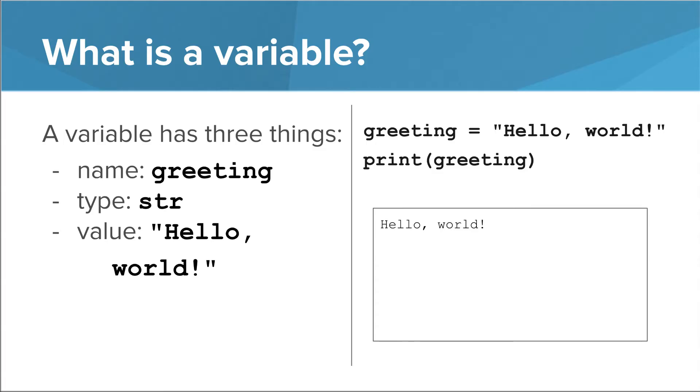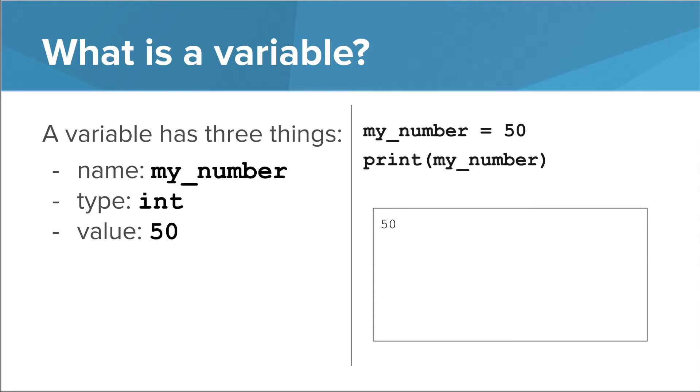Note that when you print the variable greeting, you don't put quotes around it. Then we saw a variable whose name was my_number, whose type was int, which I'll also explain in a second, and whose value was 50.